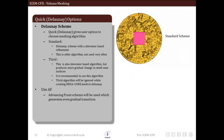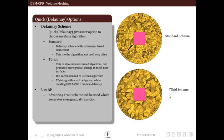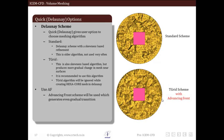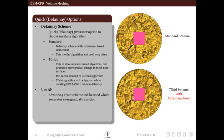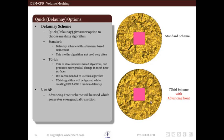As an example, this geometry is meshed using the standard scheme, and below is the tgrid scheme. When we use AF, this is how the tgrid scheme mesh changes. And when we use AF along with the tgrid scheme, this is how we get a much smoother and much better quality mesh.